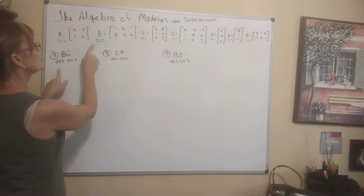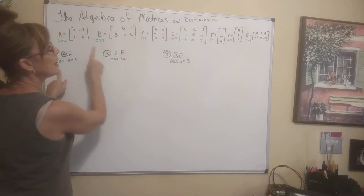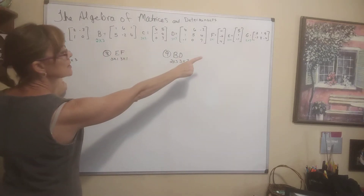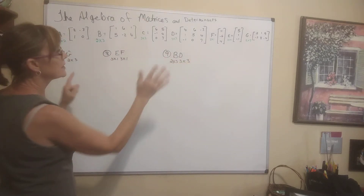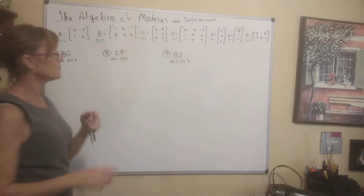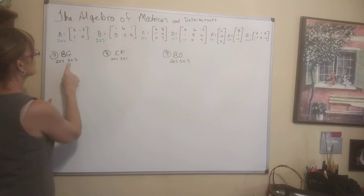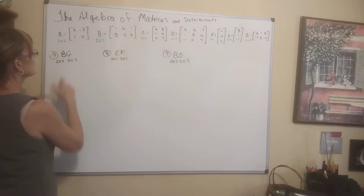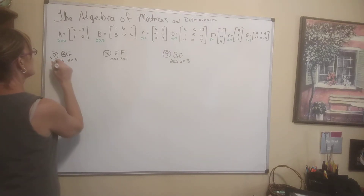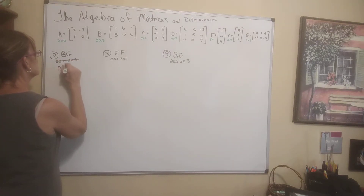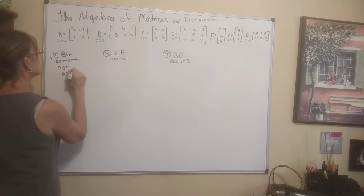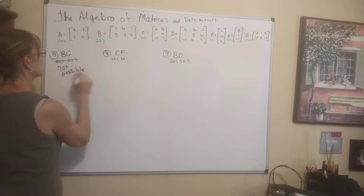Matrix B is a 2 by 3, and G is a 2 by 3. They're the same size, but do the inner dimensions match? 3 and 2 are not the same, so no — not possible. We cannot multiply these together.